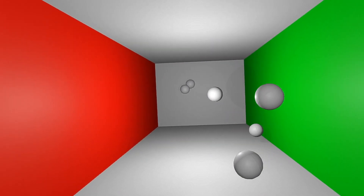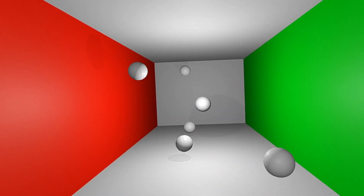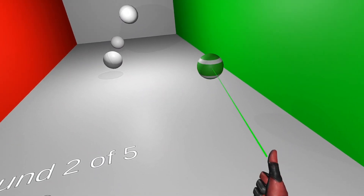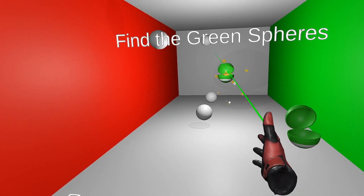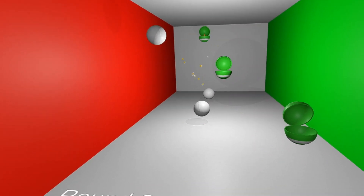Customizations include the number of targets and the speed of the targets. The Easy, Medium and Hard settings increase the number of spheres you'll need to follow.